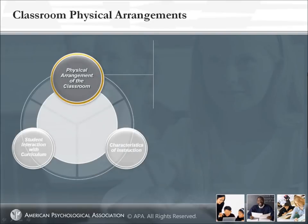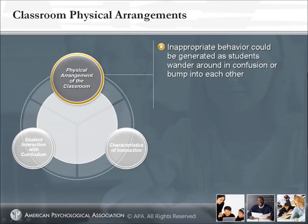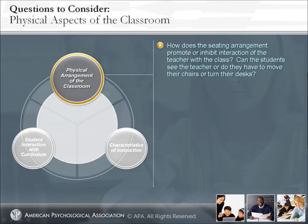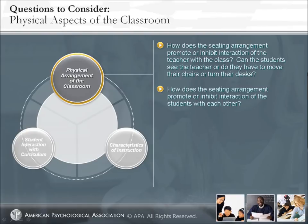Classroom Physical Arrangements. Imagine a classroom where it is difficult for students and teachers to find assignments. Desks and tables are haphazardly arrayed and traffic does not flow smoothly. It is easy to see how inappropriate behavior could be generated as students wander around in confusion or bump into each other. Mr. Jones agreed with the principal that the problems were worse in the part of the classroom that was furthest from his desk. Simply restructuring the room can be very beneficial. Relative to the physical arrangement of the room, we could ask: How does the seating arrangement promote or inhibit classroom interaction? Can the students see the teacher, or do they have to move their chairs or turn their desks? How does the seating arrangement promote or inhibit students' interaction with each other?